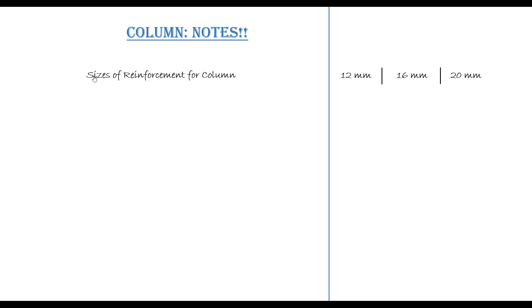Another important thing is the cover to reinforcement. The cover to reinforcement depends on a number of things, but generally for a column you can have a cover of 30mm in situations where the conditions are not really critical. In some situations you can have more than that, like 40mm.